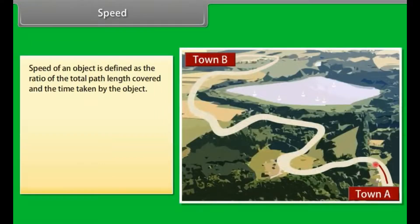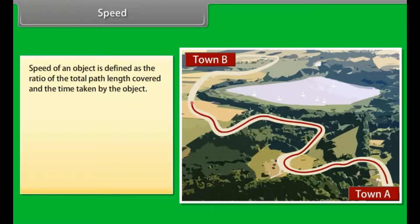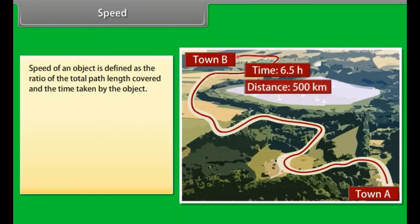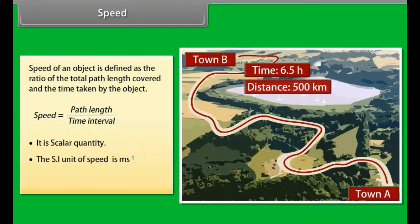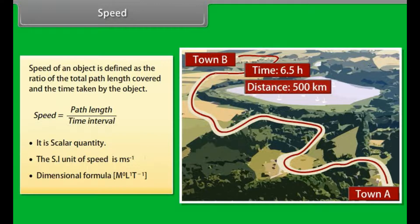Speed of an object is defined as the ratio of the total path length covered and the time taken by the object. Therefore, speed is equal to path length upon time interval. It is scalar quantity. SI unit is m/s. Dimensional formula: M raised to the power 0, L raised to the power 1, T raised to the power minus 1.